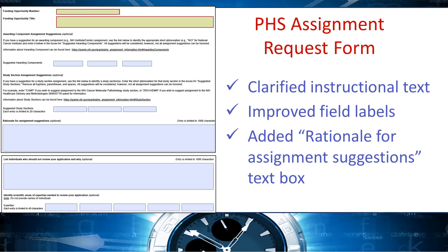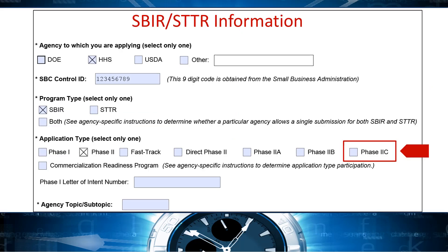The PHS assignment request form was reworked to improve usability. Among the changes are clarified instruction text, improved field labels, and a new rationale for assignment suggestions text box. Last of all, the application type field on the SBIR/STTR information form was expanded to include Phase 2C, though this new application type was requested by another agency and NIH has no current plans to use it.